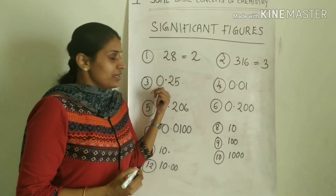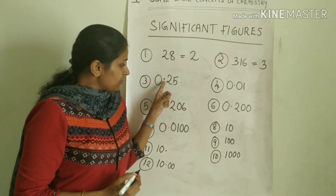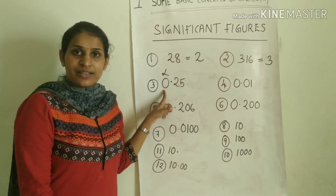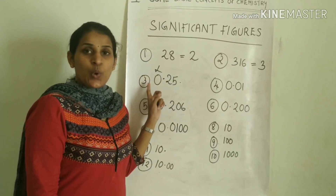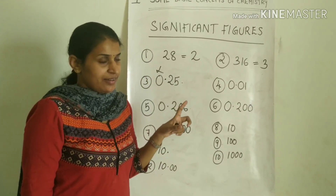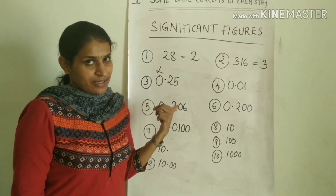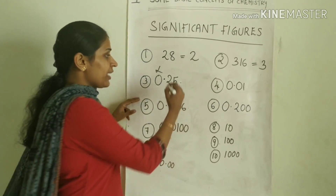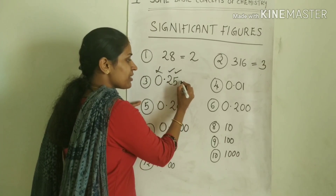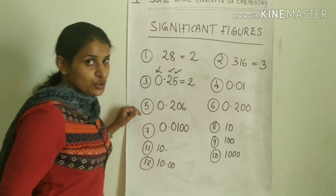Third example: 0.25. The zero on the left side of the decimal point — if zeros are only on the left side, those zeros are not significant figures. So here, 2 and 5 are significant figures. Number of significant figures is equal to 2.